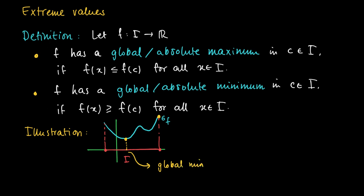This is the location of the global minimum. On the right hand side as a boundary value at the boundary of the interval we find a global maximum. We also have something that we will call later a local maximum. You see that it's a kind of peak, but it's not a global maximum or minimum.